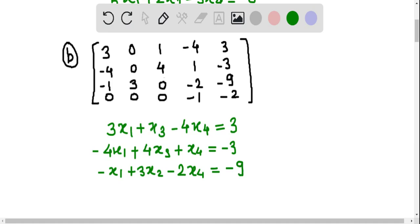From the last row, we can write the linear equation minus x4 is equal to minus 2.